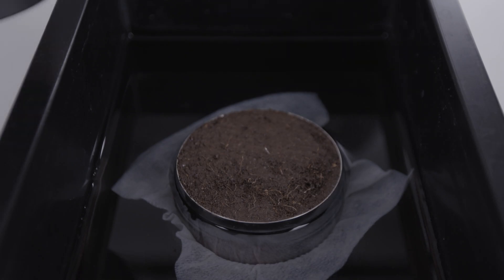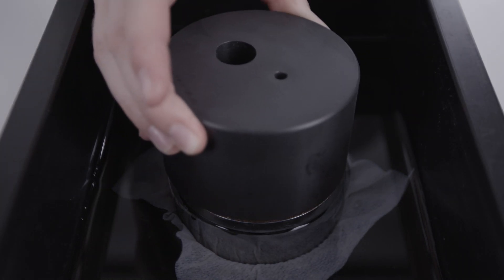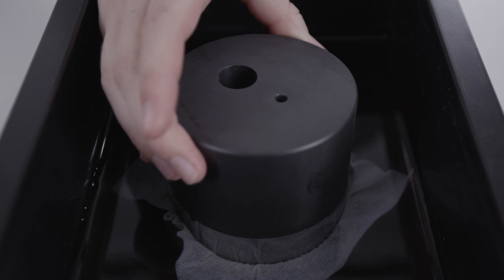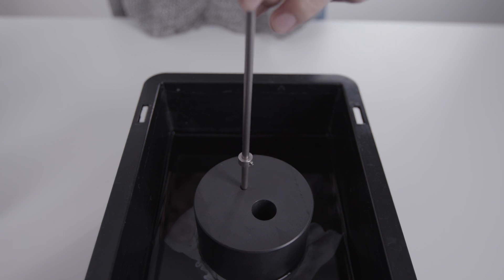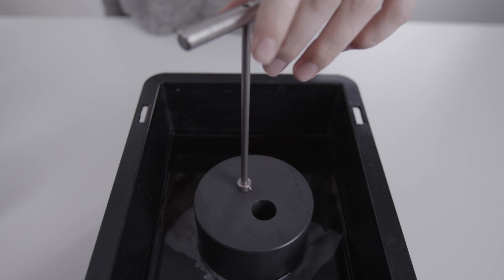To assemble the sensor unit and the soil sample, set the auger guide onto the saturated soil sample in the water container on the cutting edge of the sampling ring. The small hole should be above the sample ring weight lettering. This makes finding the right position easier when the sensor unit and the soil sample are assembled.